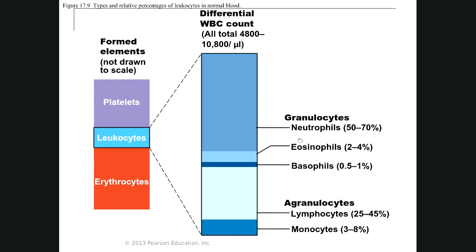You need to know the percentage of these leukocytes. For the granulocytes — neutrophil, eosinophil, and basophil — they are lighter than agranulocytes and located on top of the leukocyte layer. Neutrophils are the most numerous, about 50 to 70 percent. Eosinophils are about 2 to 4 percent, and basophils are less than 1 percent. For the agranulocytes, lymphocytes are 25 to 45 percent, and monocytes are 3 to 8 percent.